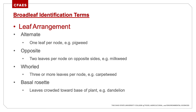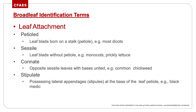Alternate is one leaf per node; opposite is two leaves per node on opposite sides; whorled is three or more leaves per node; and basal rosette means leaves crowded toward the base of the plant. Leaf attachment: petioled means the leaf blade is born on a stalk; sessile means the leaf blade attaches directly to the stem with no stalk; connate means opposite sessile leaves with bases united, wrapping around the stem; and stipulate means possessing lateral appendages at the base of the leaf, like black medic.